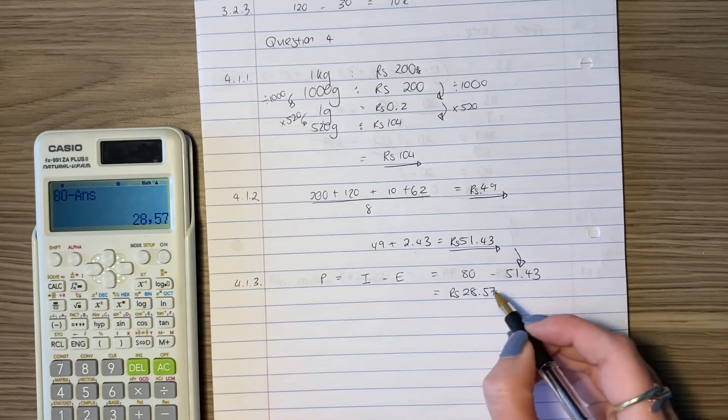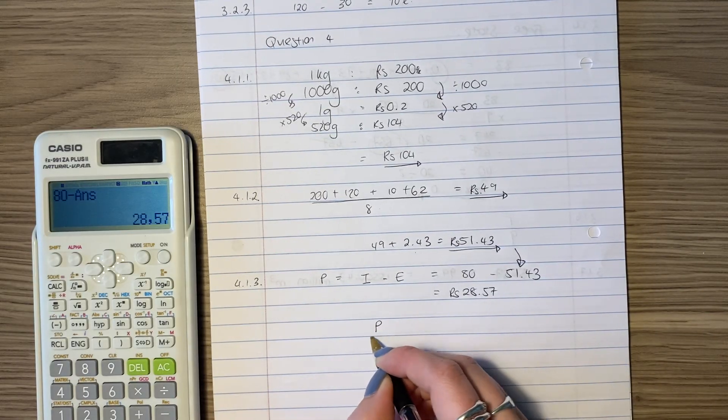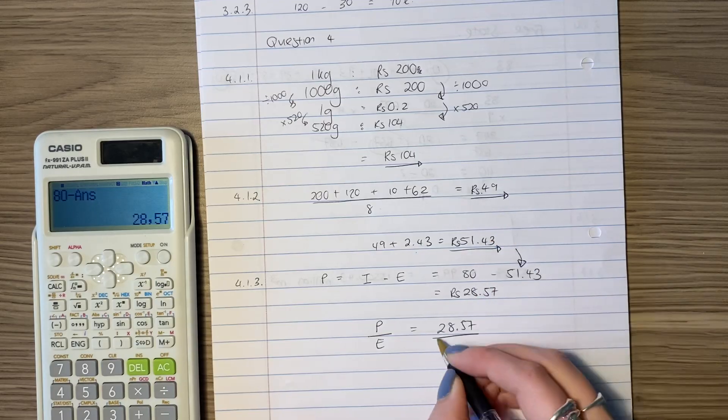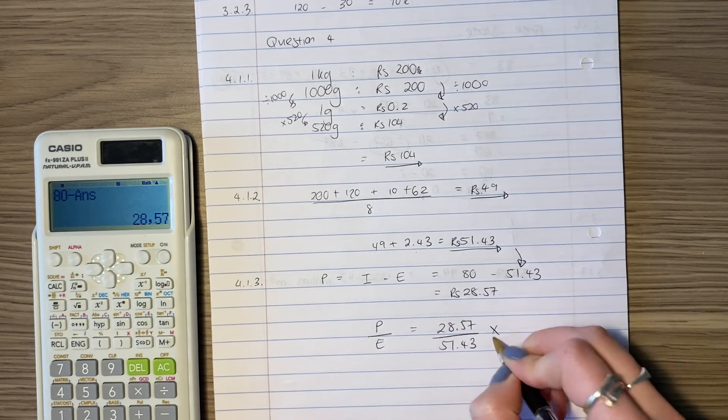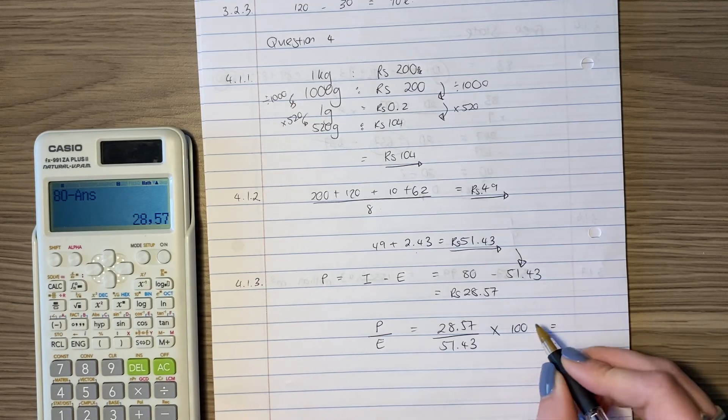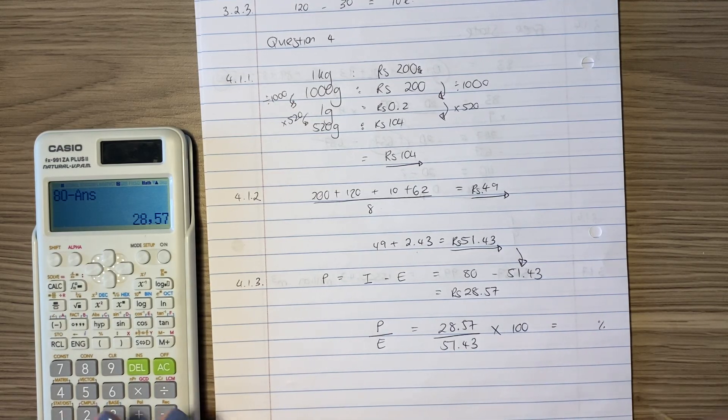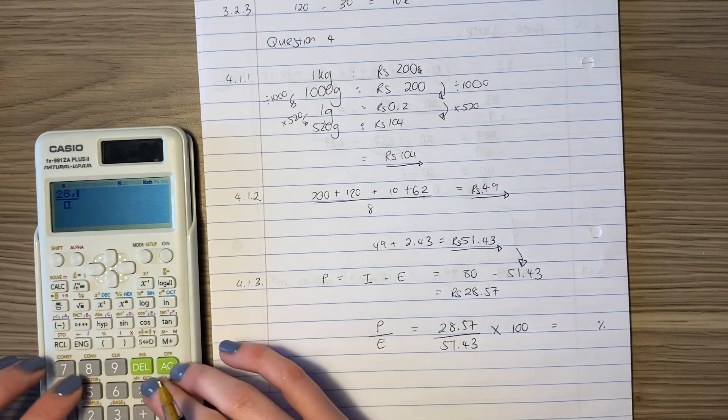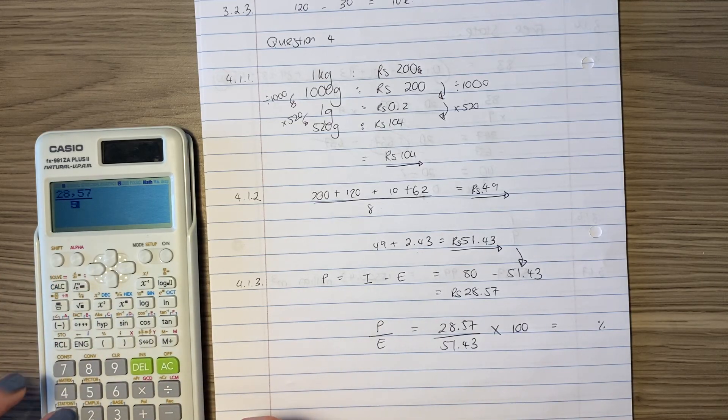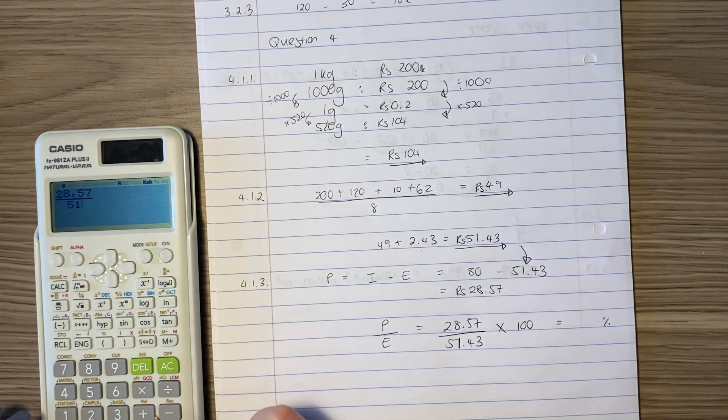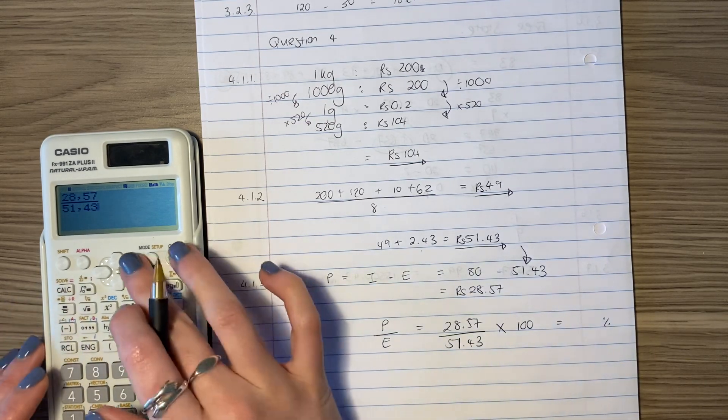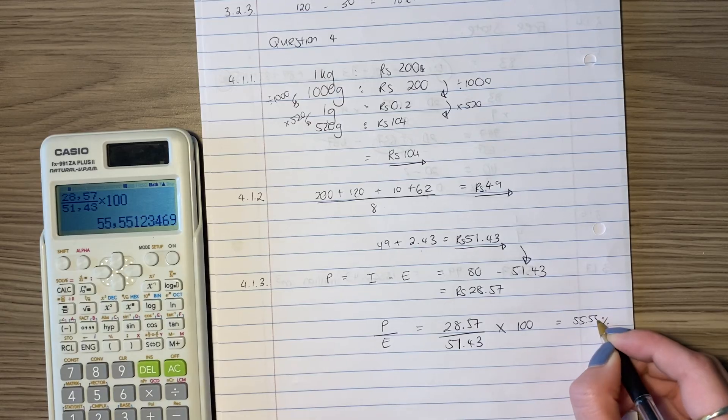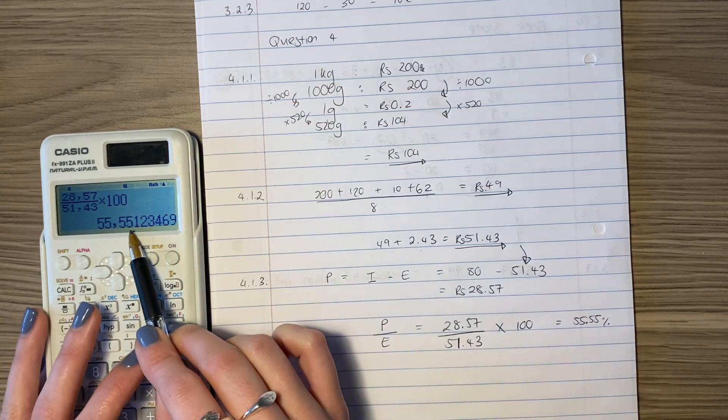So how do we do percentage profit? We basically are going to put our profit over our expenses. So we're going to say 28.57. What were our expenses? 51.43. And we're going to times by 100 because we want it to be a percentage. Don't put the percent in there. Put the percent as a unit after your answer. So we're going to put 28.57 over there. And then we're going to put 51.43 at the bottom. Then I'm going to times by 100 over there. And it is 55.55%. I'm just rounding it off to two decimals.